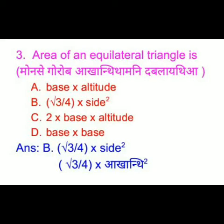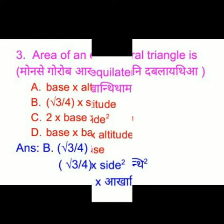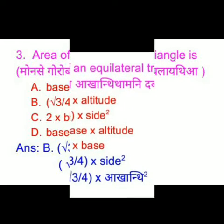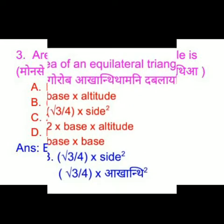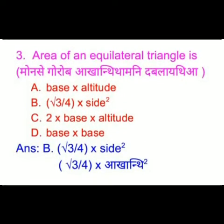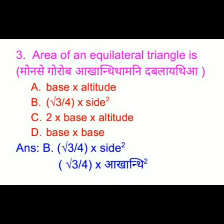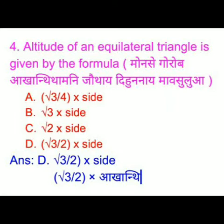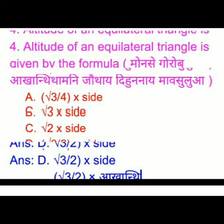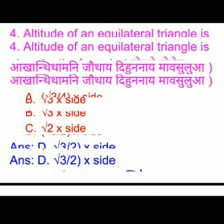The area of an equilateral triangle — we have four options and the right answer is option B: root 3 by 4 into side square. The altitude of an equilateral triangle is given by the formula — we have four options and